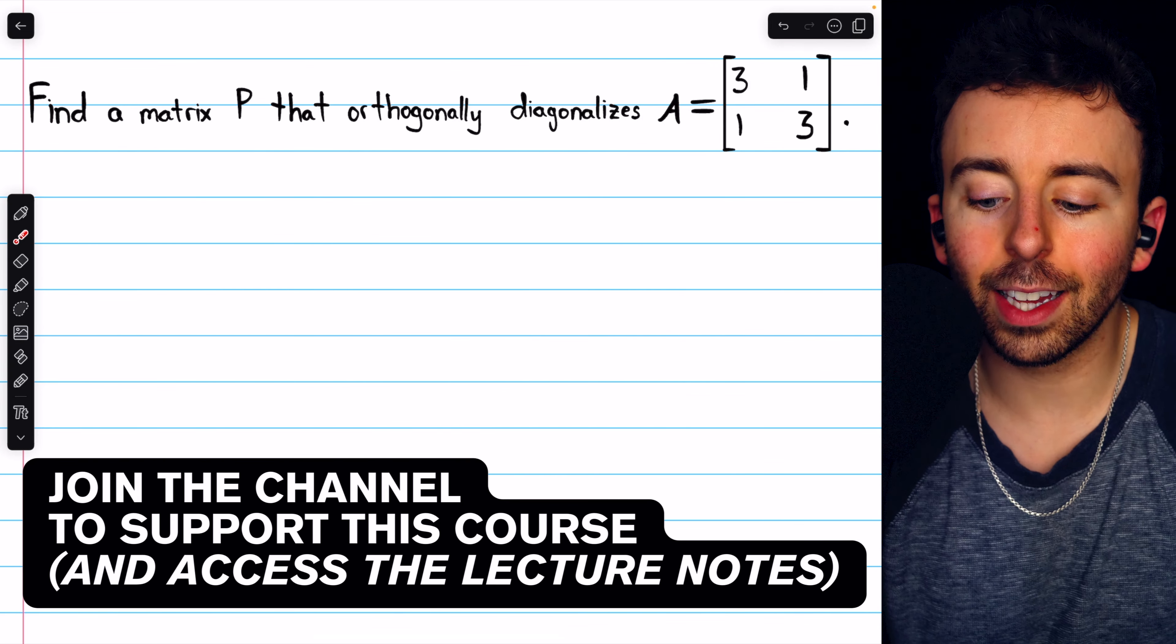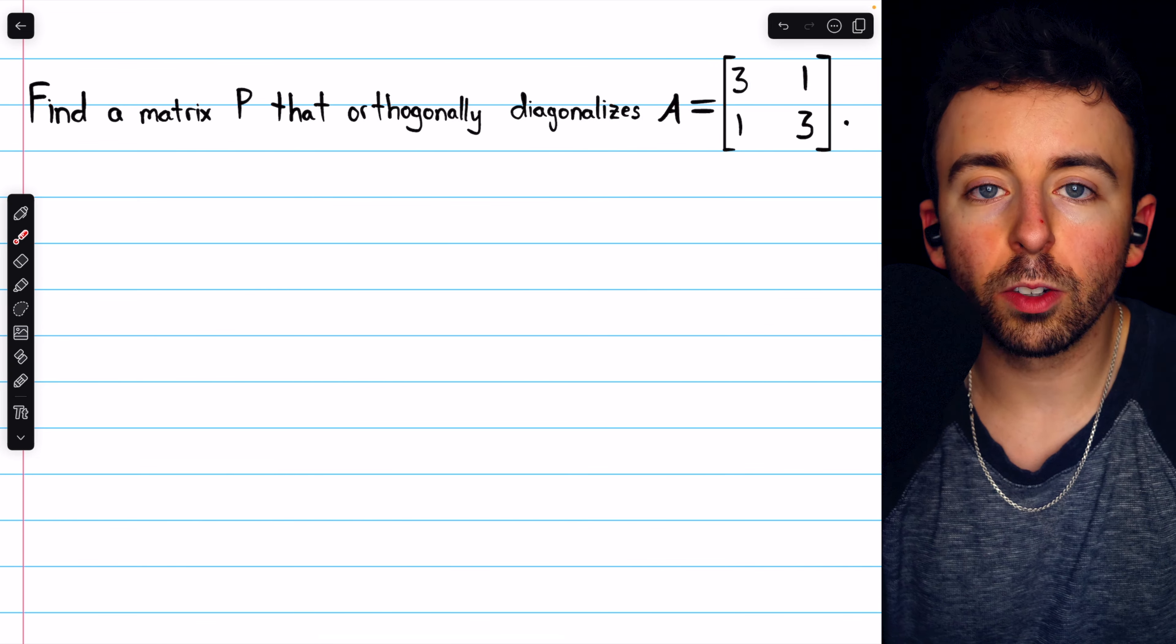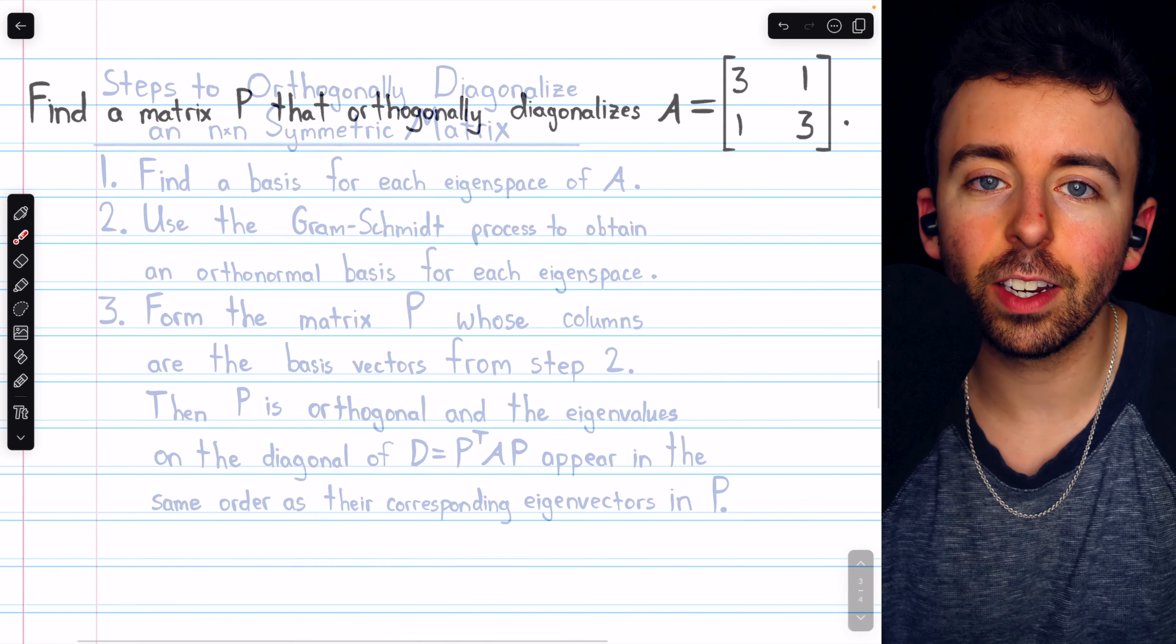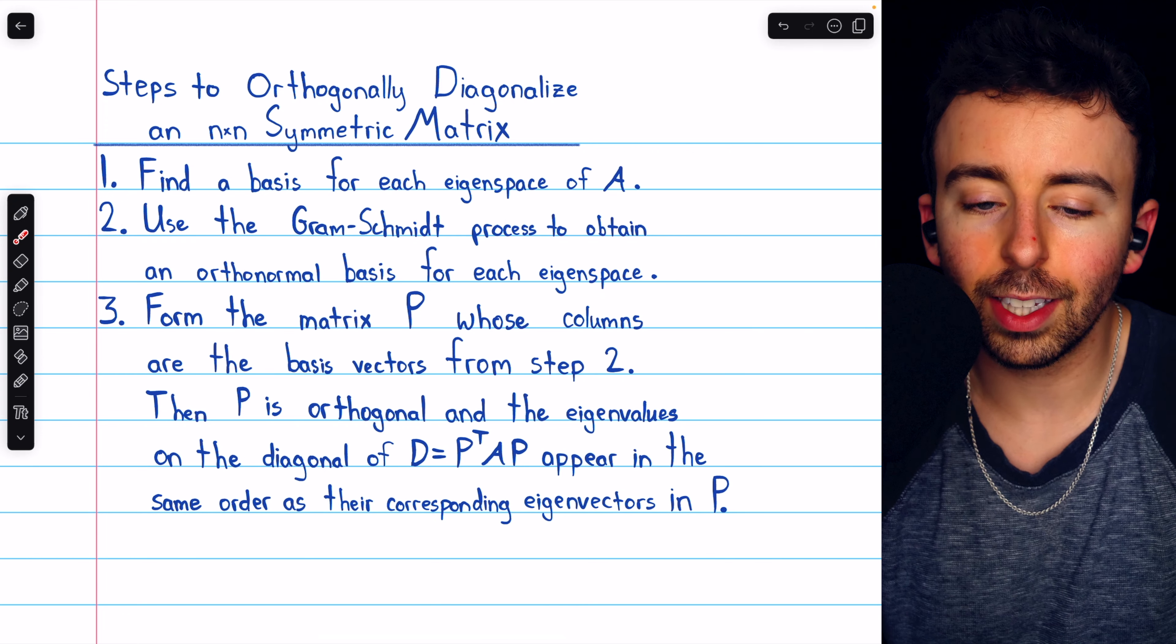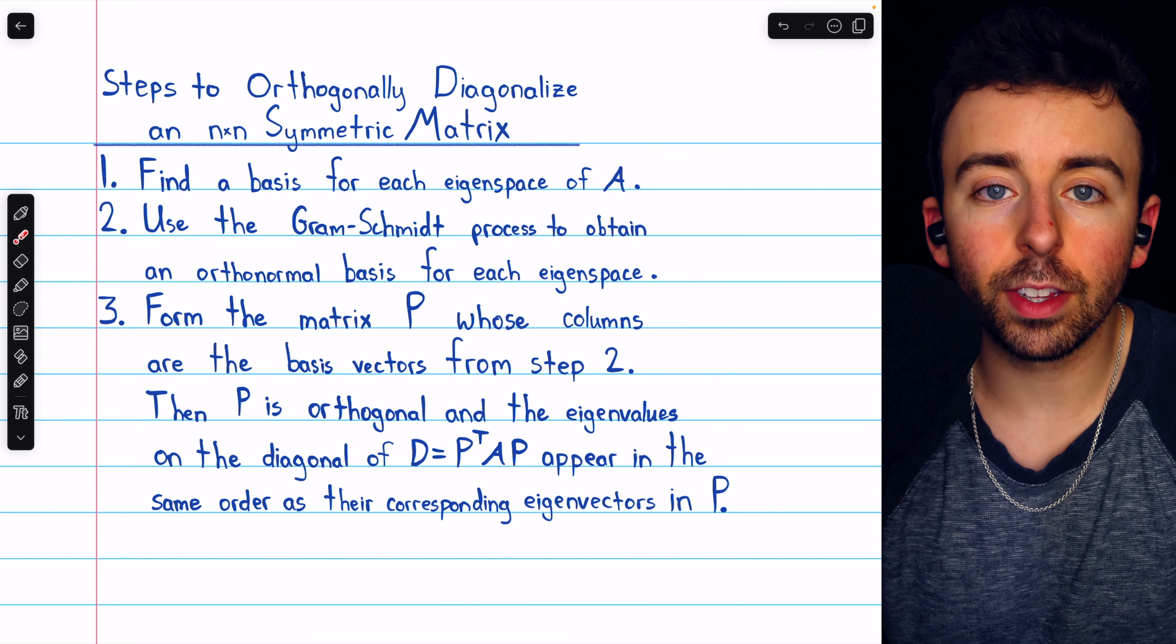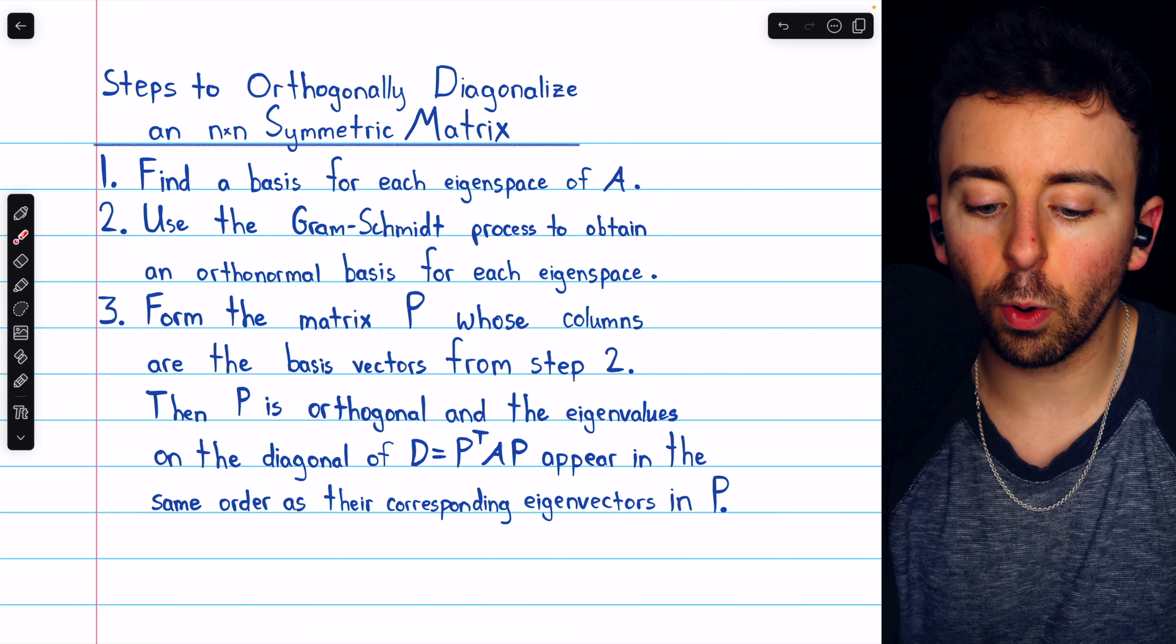We're going to orthogonally diagonalize this 2 by 2 matrix. This will require us to find an orthogonally diagonalizing matrix P. I'll leave a link in the description to the lesson where we introduced orthogonal diagonalization. In that video we saw these are the three steps to orthogonally diagonalize an n by n symmetric matrix, and these are the steps we'll follow for this problem. We have to begin by finding a basis for each eigenspace of our matrix.